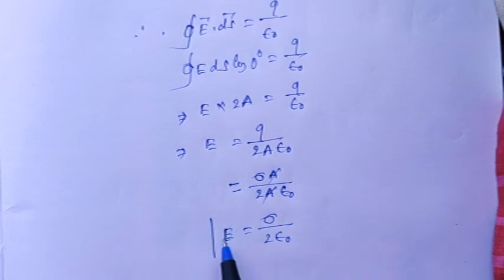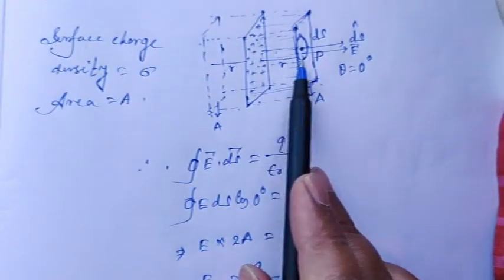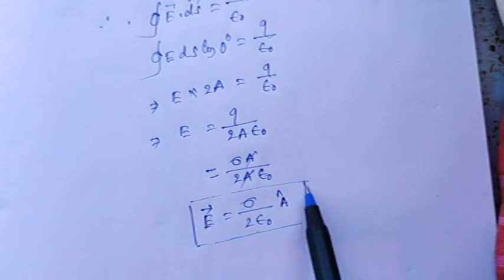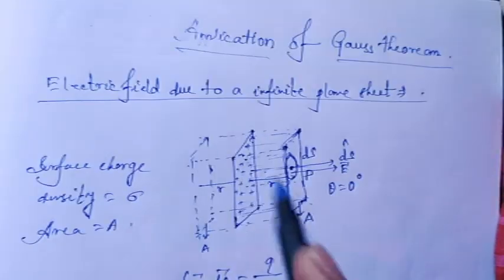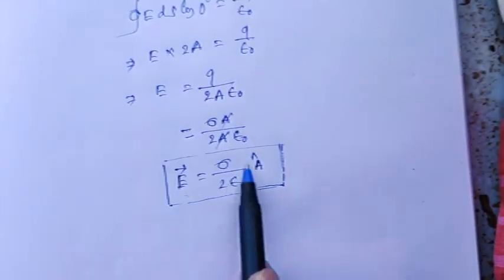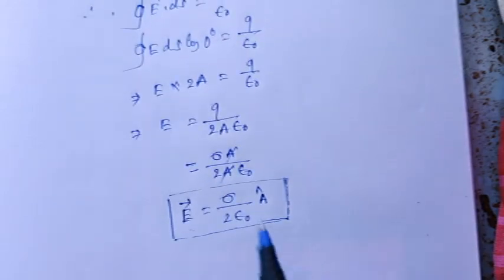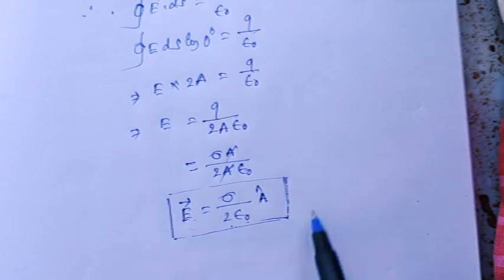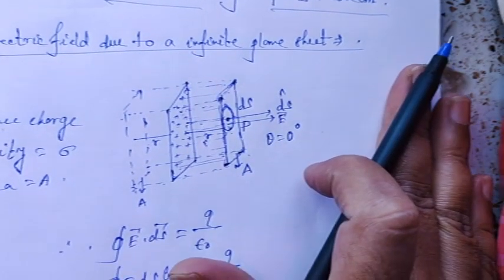E is the electric field and it's a vector. Now what will be the direction? E equals sigma by 2 epsilon naught of â (or ŝ cap) — in the direction perpendicular to the surface. From this one can easily say this electric field is independent of the distance r, because this electric field does not contain any distance value — r, x, or whatever. So the electric field E = σ/2ε₀ is a uniform electric field. The plane sheet always emits a uniform field — there will be no change with distance.